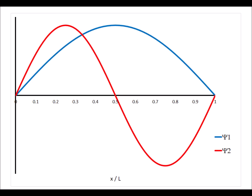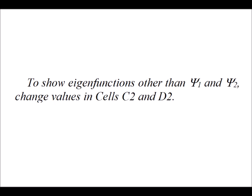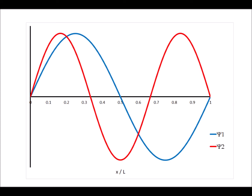The resulting graph will show psi 1 when n equals 1 and psi 2 when n equals 2 — the first two eigenfunctions for the one-dimensional particle in a box problem. If we want to see eigenfunctions for n values other than 1 and 2, all we have to do is go to cells C2 and D2 and change those values to some other positive integer, and the graph will update accordingly. For example, we can display the eigenfunctions for n equals 2 and n equals 3.